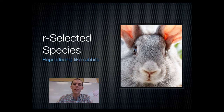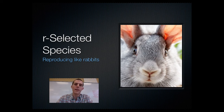Organisms that are R-selected are usually smaller organisms that reproduce often and in high numbers — frogs, rabbits, insects, things like that — that can reproduce quickly and have a lot of kids.